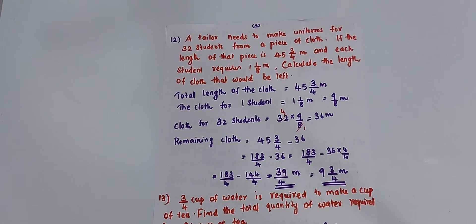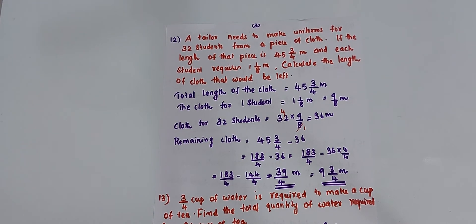Now, the remaining cloth: the tailor has 45 and 3 by 4 meters. So, remaining cloth equals 45 and 3 by 4 minus 36, which gives 39 by 4 meters. That is equal to 9 and 3 by 4 meters.